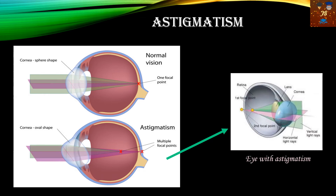Viewing the astigmatic eye from another angle, we can see the vertical light rays entering the cornea and lens — shown in green — making one focal point, which is the first focal point. The horizontal rays, shown in pink, create a second focal point on the retina. So there are multiple focal points in the case of the astigmatic eye. The first problem is the cornea shape changing from sphere to oval, and the second is that this misshapen cornea creates multiple focal points rather than a single one.